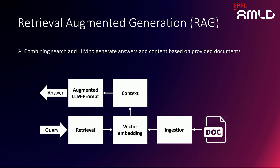The retrieval augmented generation process can look very simple, and maybe some of you have already tried it out or created pilot projects. Basically, you take documents from your company and ingest them into a vector database. You then embed the query into the same vector space and look for similar documents using techniques like cosine similarity. Then you send the query together with the retrieved context to a large language model to perform specific tasks or answer questions.